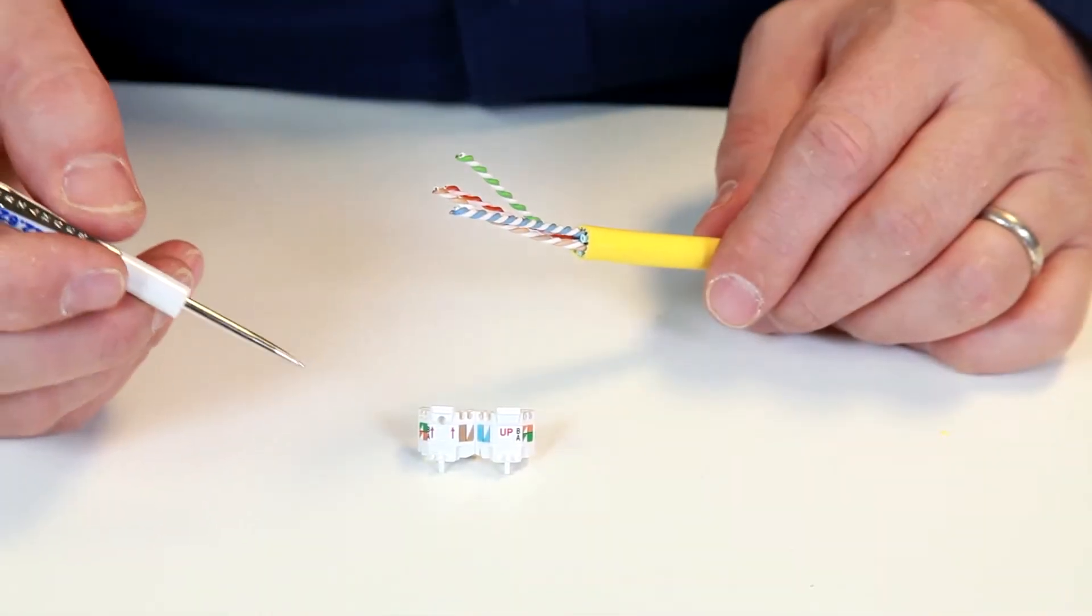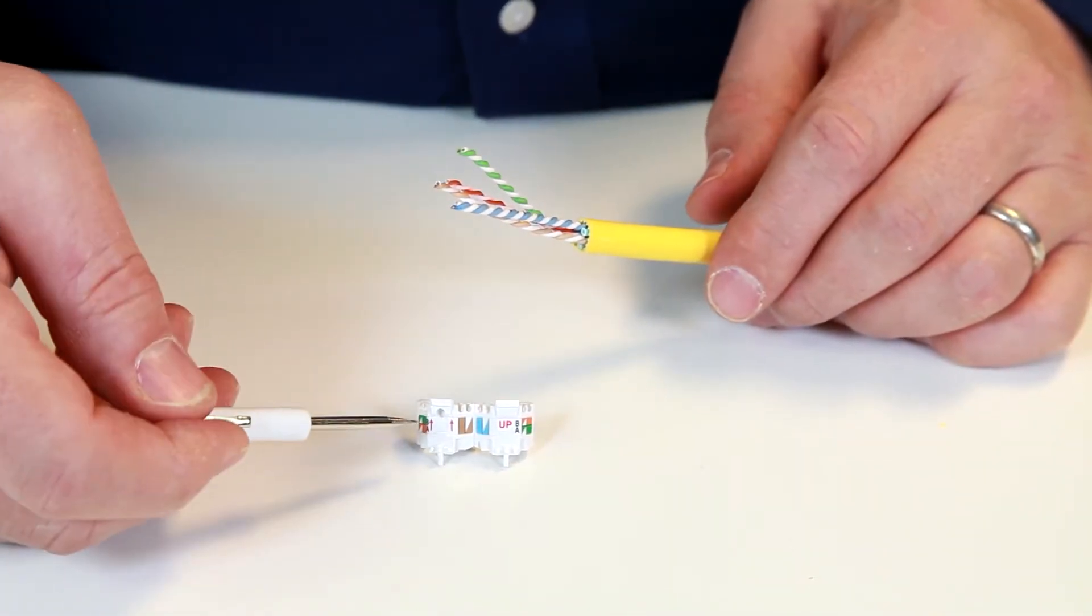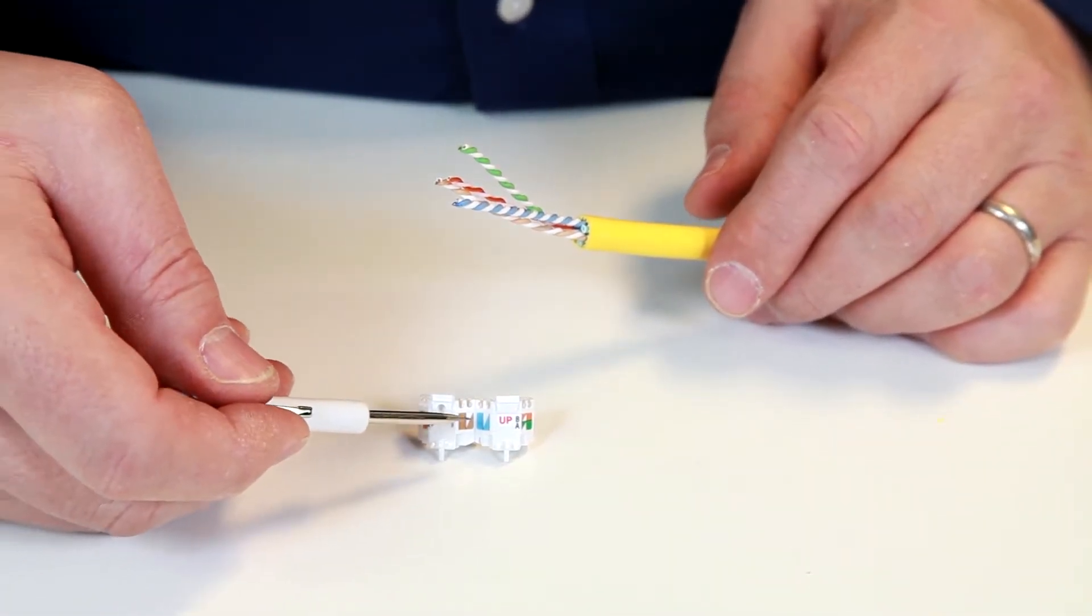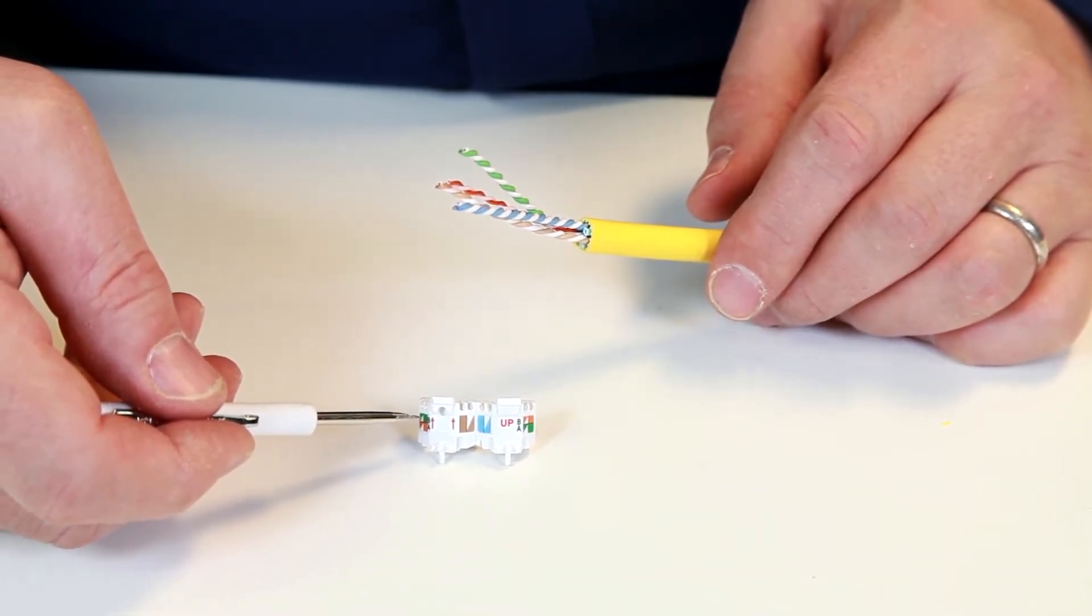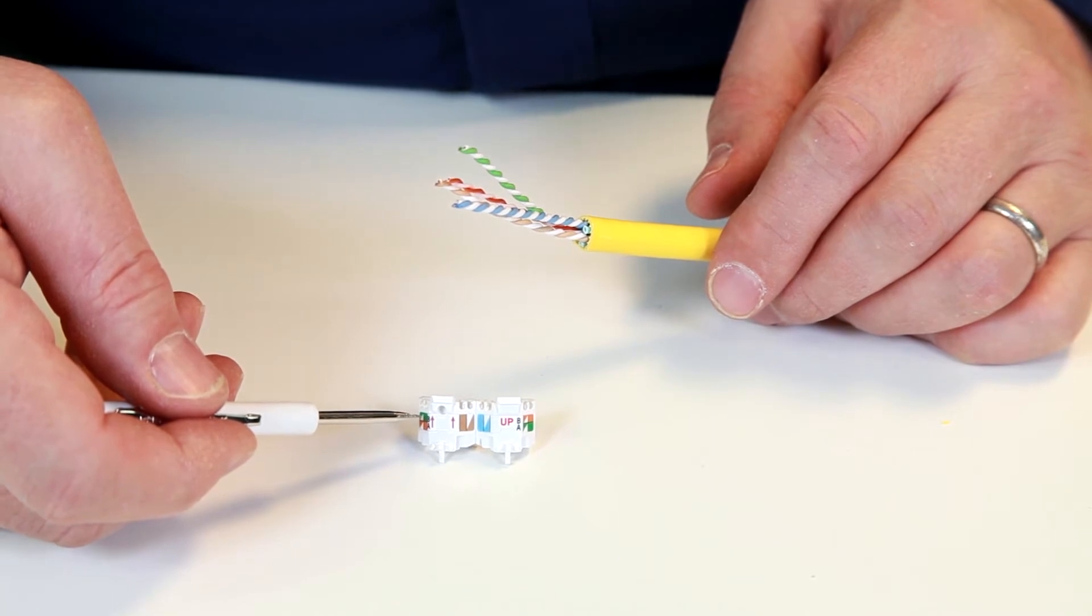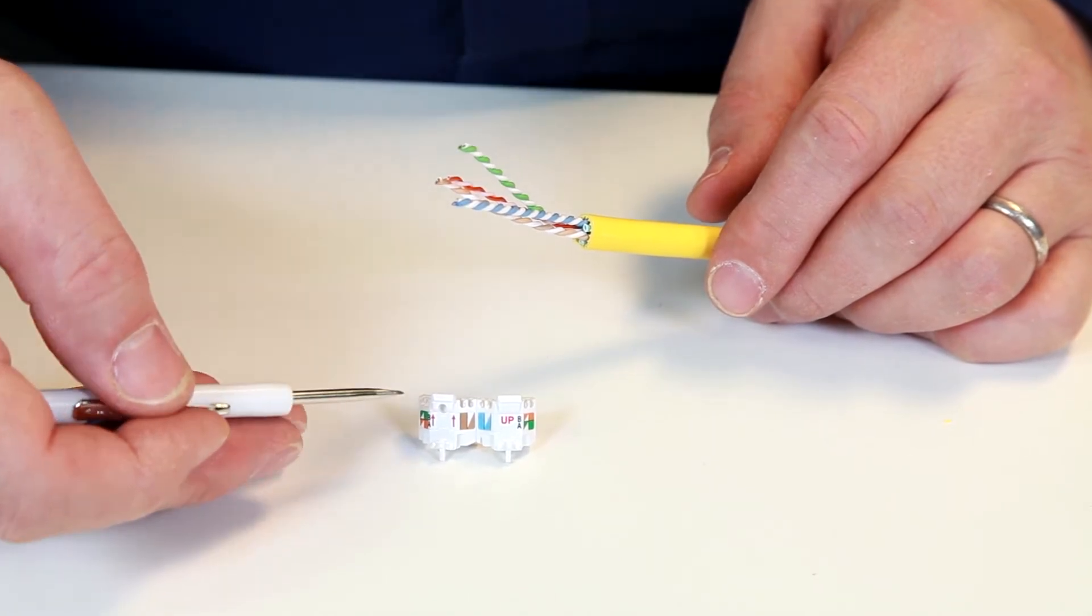Next we're going to put the wire manager onto the cable. The wire manager has a dual wiring label on it with A and B wiring standards. To determine which wiring standard you're using for installation, we're going to use B today.